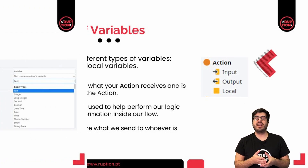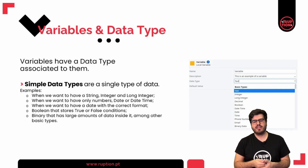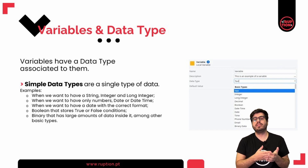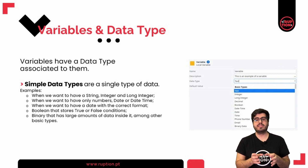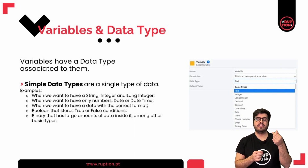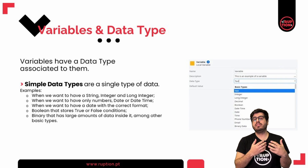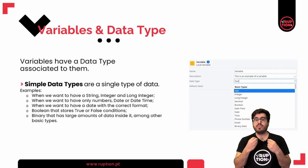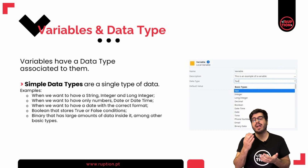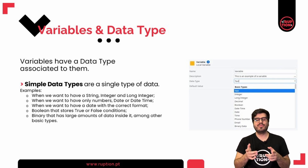Our variables must always have a data type. A data type is what your variable represents and what it can hold in terms of values. We can split data types into simple or composite data types. Simple data types are a single type of data. For example, we have data type Text when we want the variable to hold a string, Integer and Long Integer when we want only numbers, and so on. There are several simple data types you can choose from in OutSystems. On this slide, you can find a list of simple data types and what they hold, so feel free to take a screenshot because it will definitely help you out later.